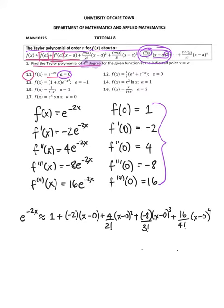So let's just write that out a little bit more clearly. So we've got 1 minus 2x plus 4 over 2 factorial times x squared minus 8 over 3 factorial times x cubed plus 16 over 4 factorial times x to the 4. And that is our answer.